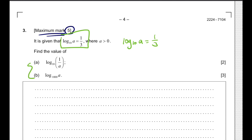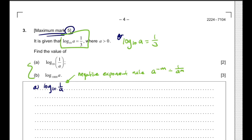Question A: we have log base 10 of 1 over A. We have to change the format of this logarithm to use the given statement and find the value of this logarithm. In order to do that, we first going to use the negative exponent rule, which is when you have A to the power of negative M, it is equals to 1 over A to the power of M.